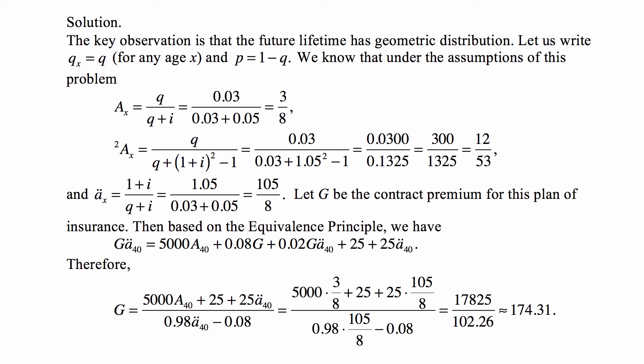This is now an equation with G being the only unknown. So we solve it for G: G = (5000·A₄₀ + 25 + 25·Ä₄₀)/(0.98·Ä₄₀ - 0.08). The parts that have G in them on the right-hand side need to be moved to the left-hand side. We plug in all the values and get approximately 174.31.